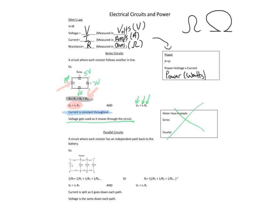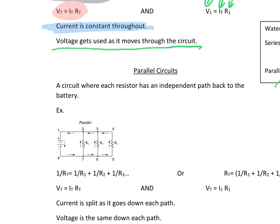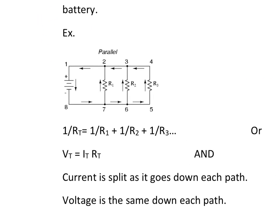Parallel circuits: a parallel circuit is one where each resistor has an independent path back to the battery. So the electricity leaves, goes through resistor 1 and comes back; leaves through the battery, goes through resistor 2; goes through resistor 3 and comes back. Each one has its own independent path to the battery. So if I break one, the other two are still good.